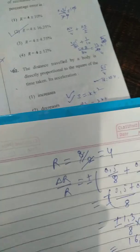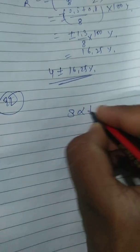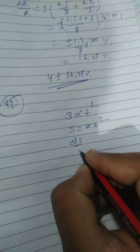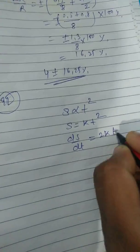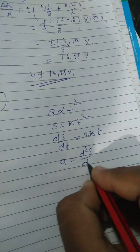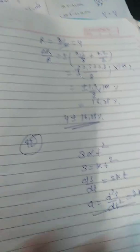Question 92: The distance of a body is directly proportional to the square of time taken. S is equal to k·t², so velocity ds/dt is 2k·t. Acceleration d²s/dt² is 2k, which is a constant. So the acceleration is uniform and the correct option is option number 3.